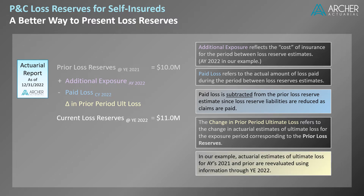In our example, actuarial estimates of ultimate loss for accident years 2021 and prior are re-evaluated based on information through year-end 2022. This change can be positive, indicating adverse development, or negative, indicating favorable development. And in the reserve reconciliation, it is in addition to the prior loss reserve estimate.